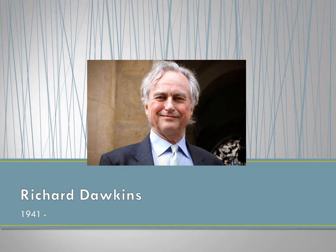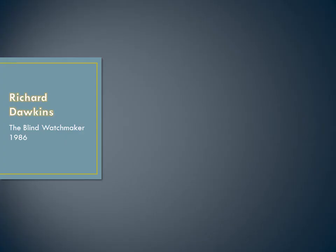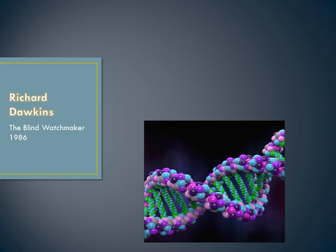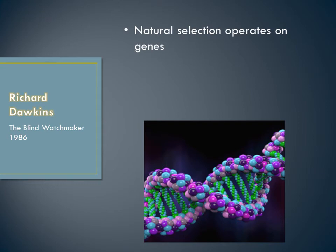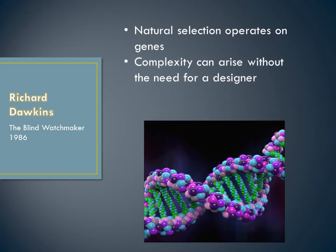Richard Dawkins is a modern scholar who is a Darwinist and has developed Darwinian theory further. In his book, The Blind Watchmaker — the analogy of course borrowed from Paley — Dawkins outlines firstly how natural selection can operate on a genetic level. His point, like Darwin's, is that complexity can arise without the need to resort to a cosmic designer.